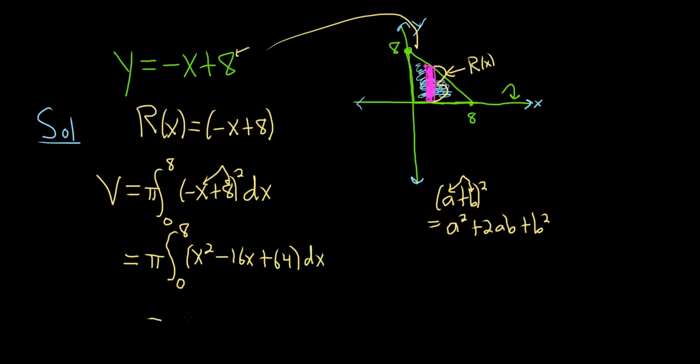Now we just integrate. This is pi - I'll leave the pi on the outside. This is x cubed over 3 using the power rule, minus 16x squared over 2, again using the power rule, plus 64x. And we're going from 0 to 8.